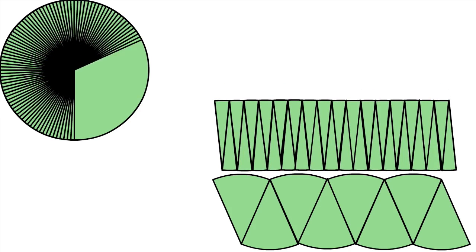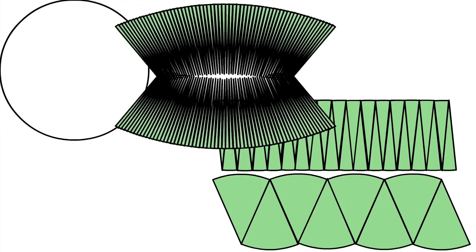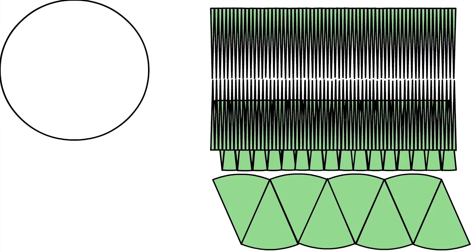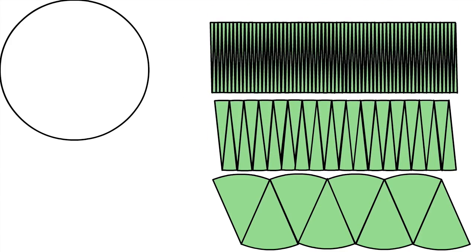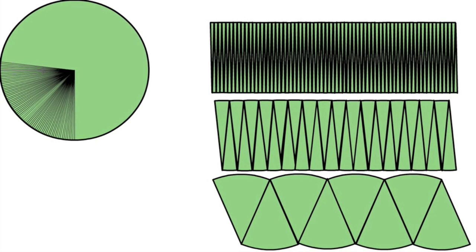So if we divide the circle into even more smaller pieces, you can see that every time the shape becomes more like a rectangle. So how small must we divide a circle before we can get a perfect rectangle?